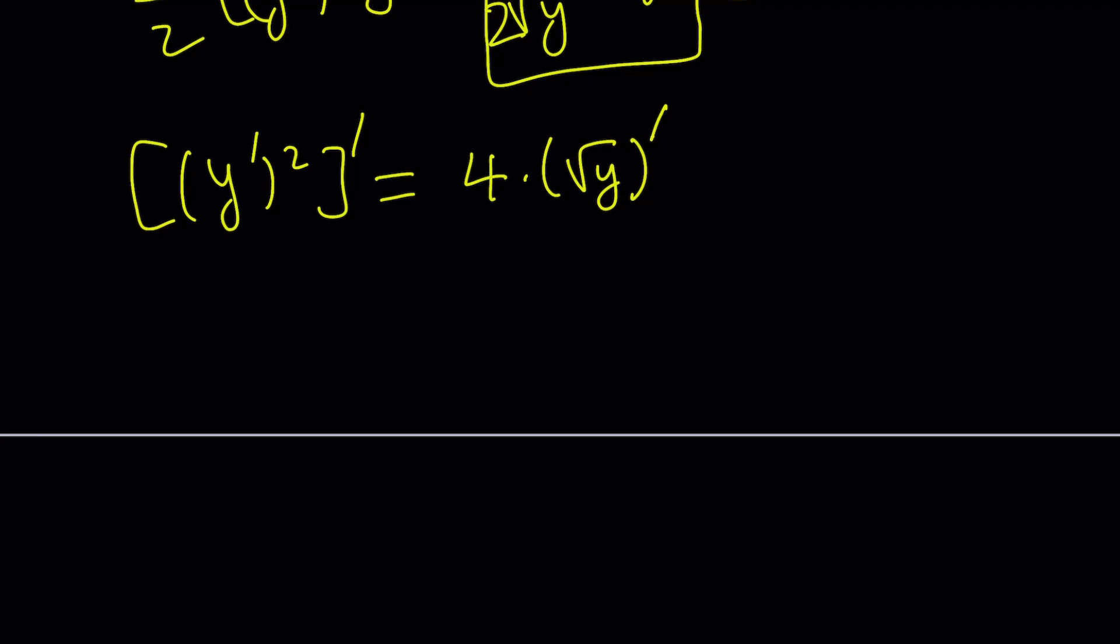Now, this is really, really good. Why? Because I have the derivative of two different things. I can just integrate and then get rid of all the derivatives. Of course, the constant is not going to change by integration or differentiation, so I'm going to keep it. What is the integral of y prime squared, the derivative of y prime squared? Of course, it's y prime squared. What is the integral of square root of y differentiated? That's going to be the square root of y. So, we'll basically get rid of both derivatives by integrating.